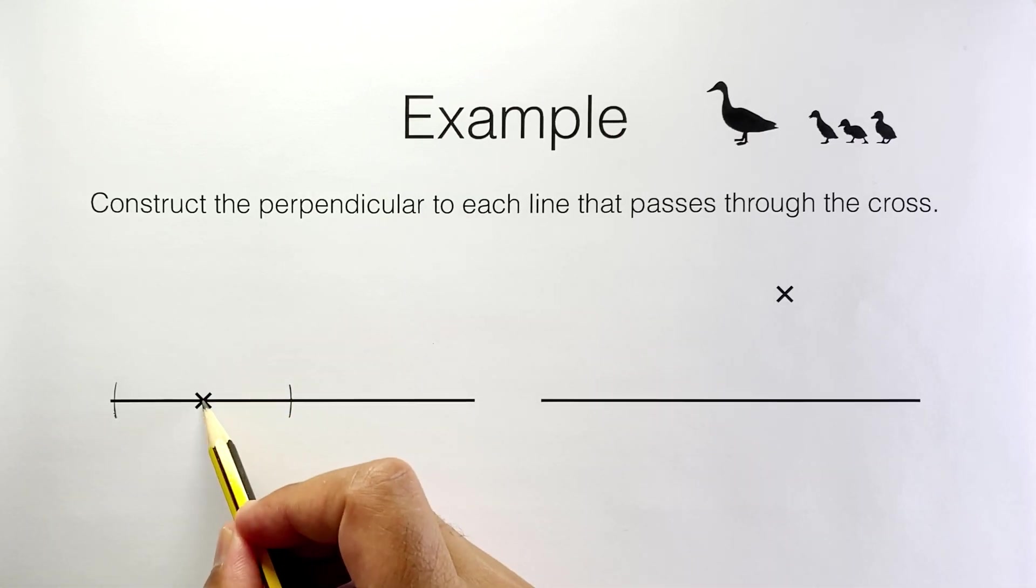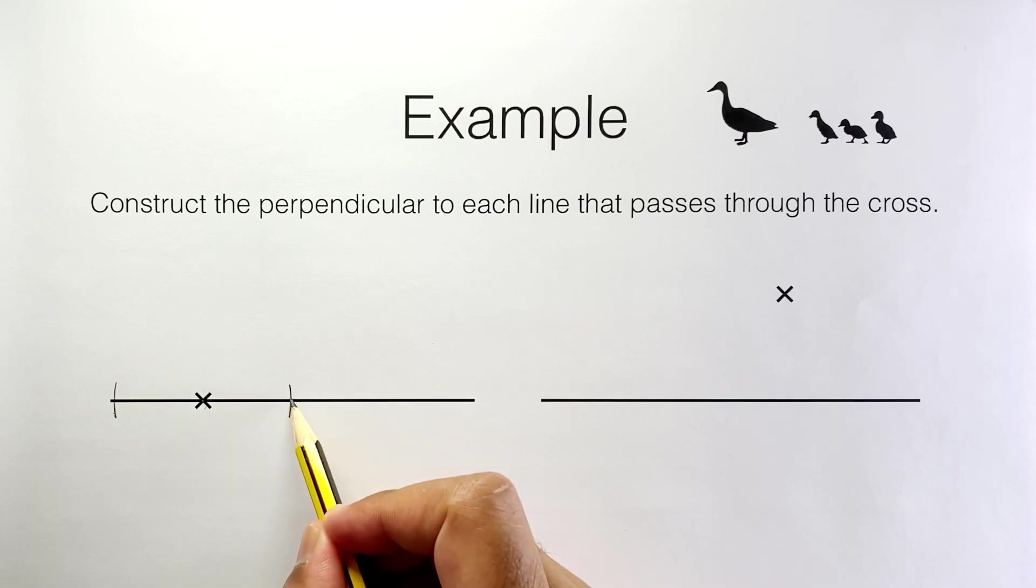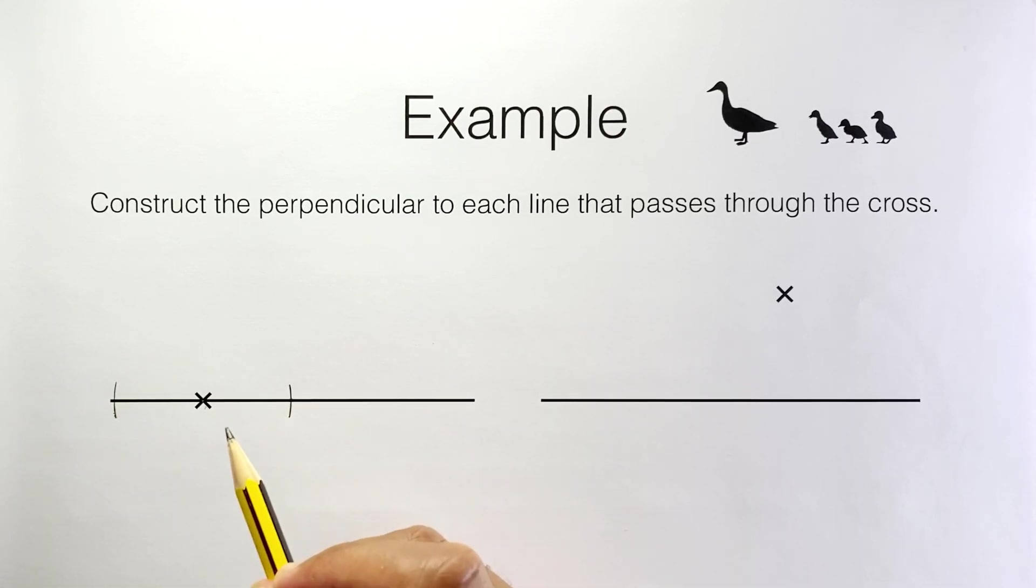That means this cross is the midpoint of those two points I just created. What I can do now is ignore the rest of the line segment and just construct the perpendicular bisector of just this bit here.